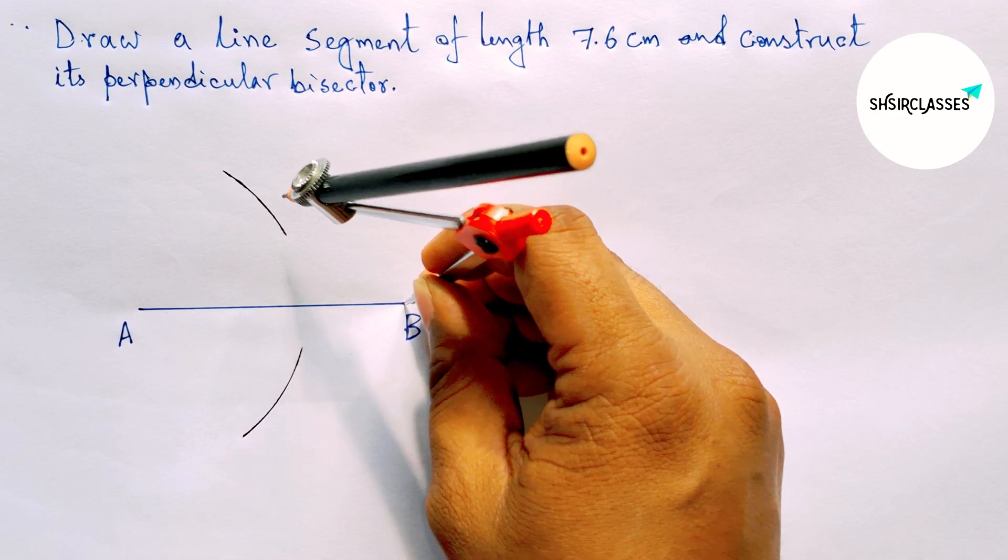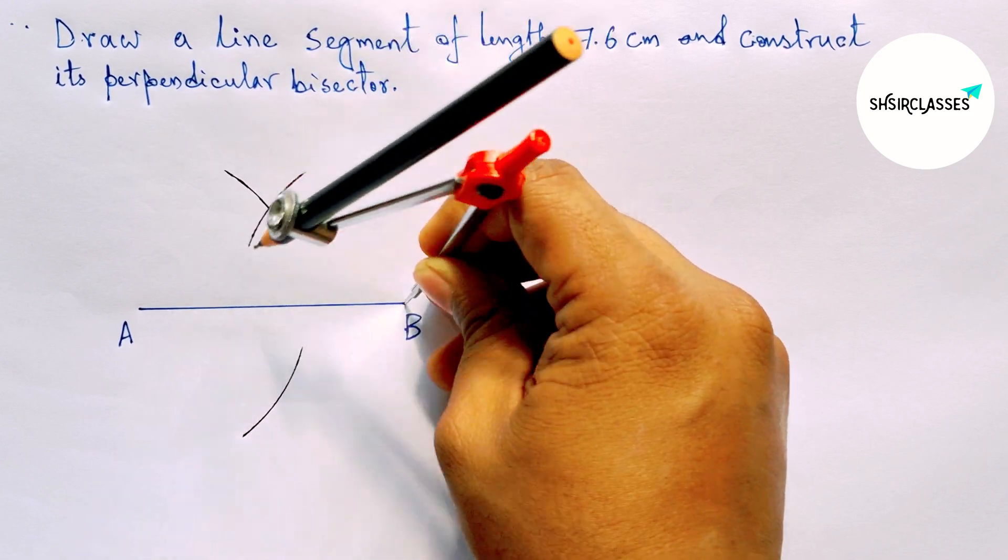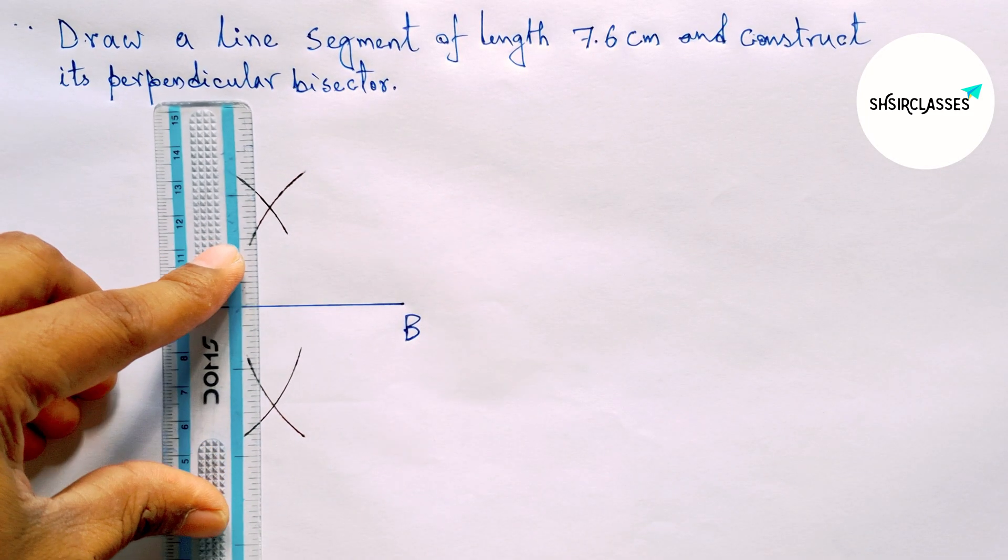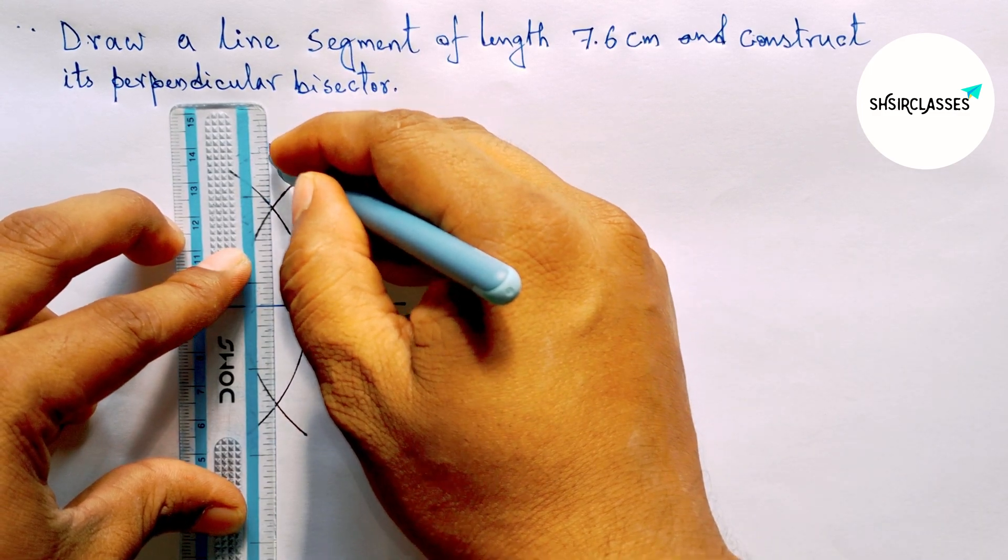...place the compass on point B and draw arcs intersecting the previous ones here and here. Now join these intersection points. This is the required perpendicular bisector.